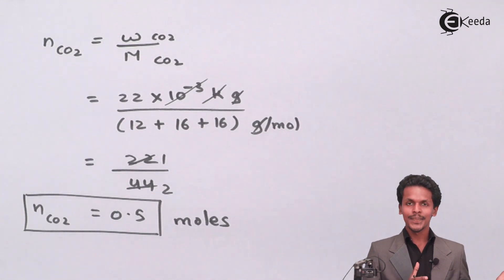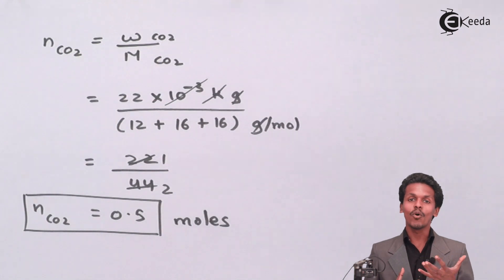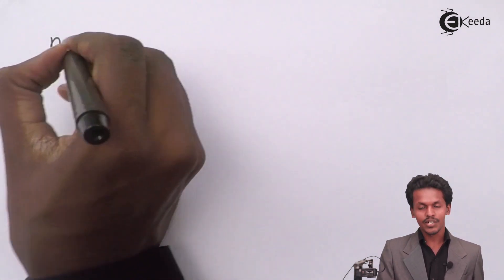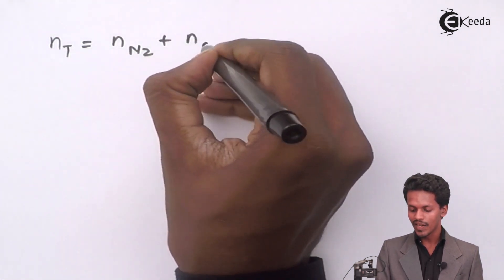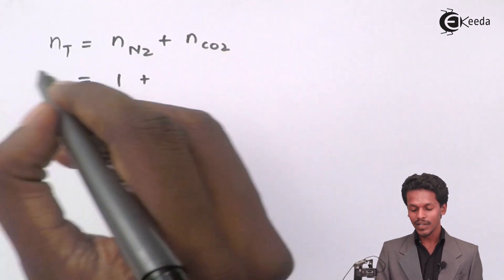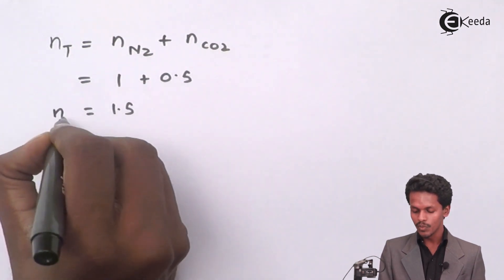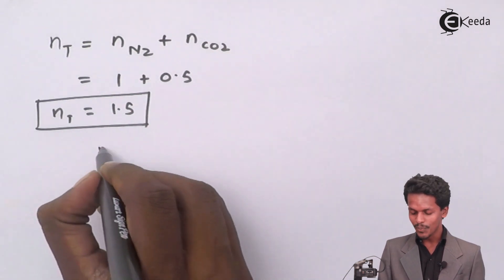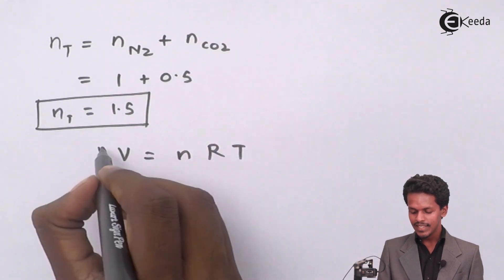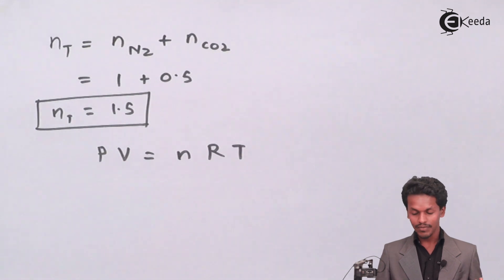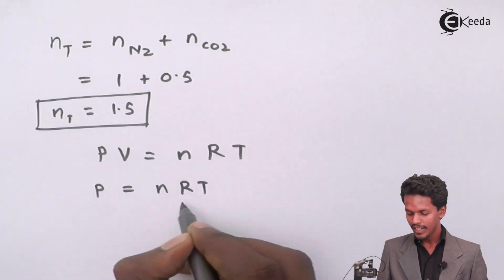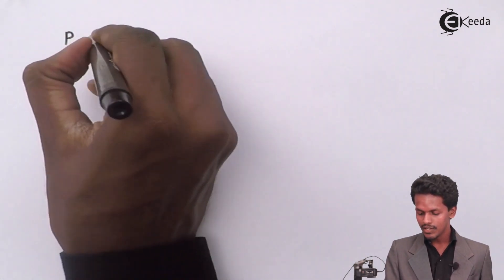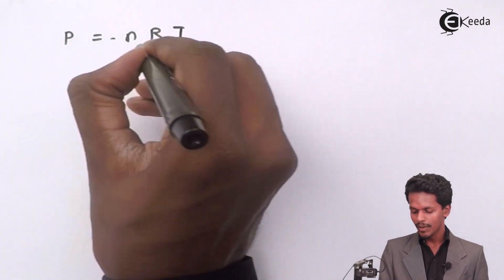The moles were calculated separately for each gas, but the total number of moles present in the tank is the sum of both. Therefore, n_total = n(N₂) + n(CO₂) = 1 + 0.5 = 1.5 mol. Now applying the ideal gas equation PV = nRT, we rearrange to get P = nRT / V.